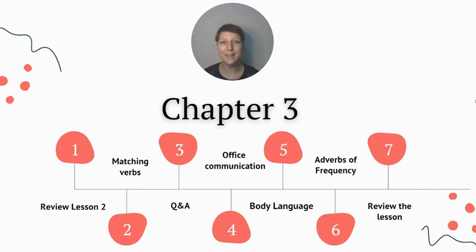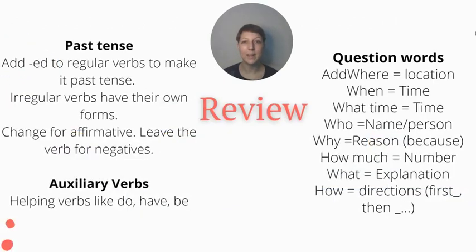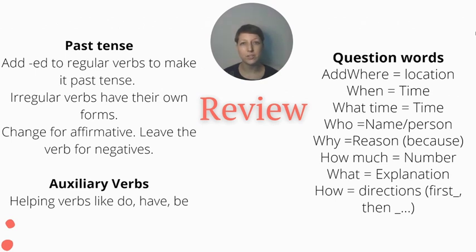In the last lesson we learned that for regular verbs we add -ed to the end to make it past tense: faxed, messaged, phoned. Irregular verbs have their own rules and we just have to memorize their forms, like buy/bought, pay/paid. For affirmative verbs we change the verb, but for negative verbs we don't change the form. For example: she ran, but she didn't run — 'run' stays the same for negatives.